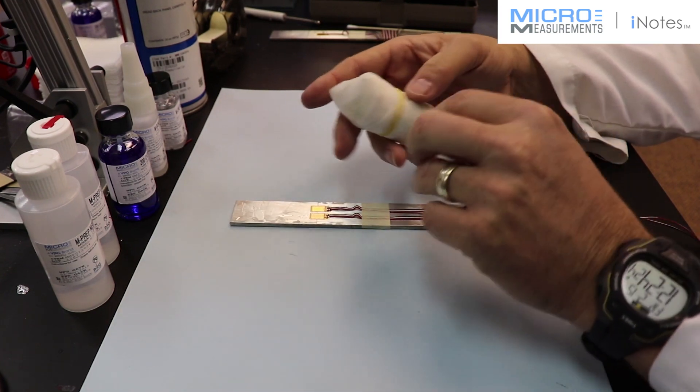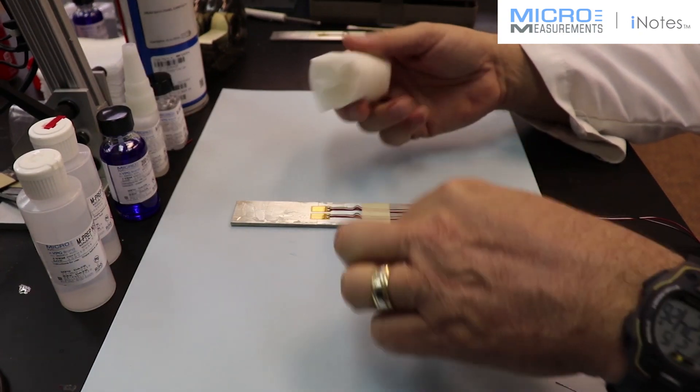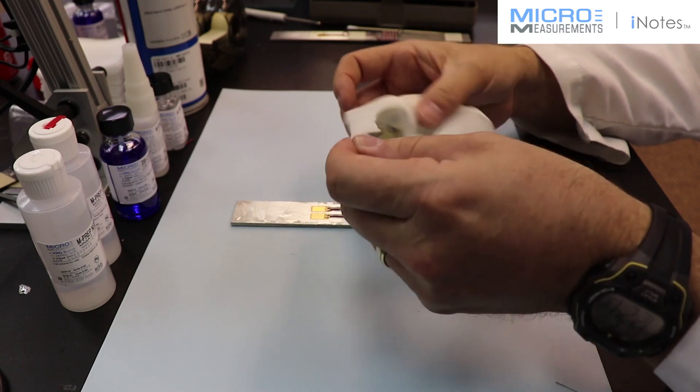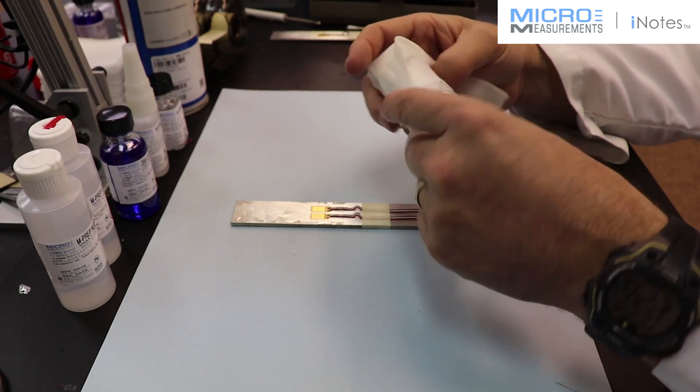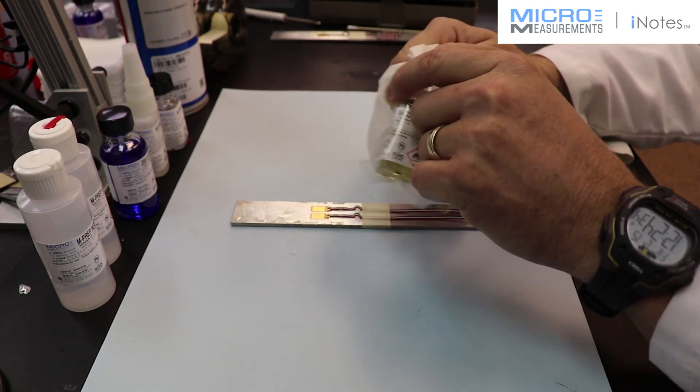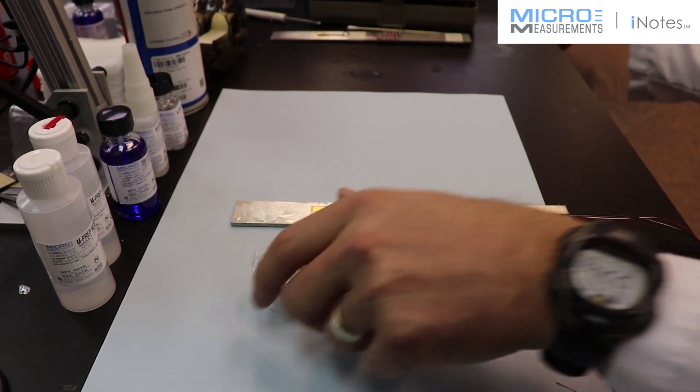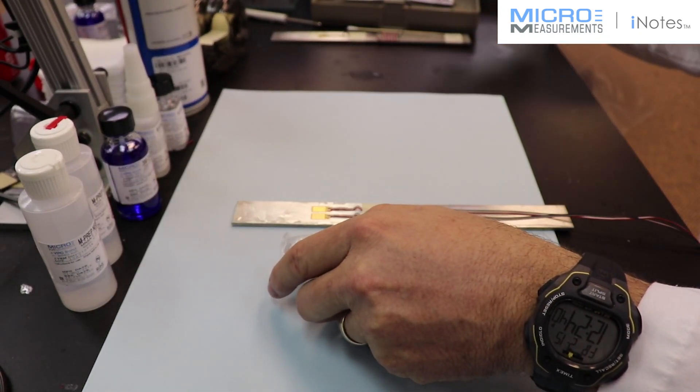So the last step here is I'm going to apply some protective coating. We're going to use the M-Coat A which is a polyurethane. It goes on very easy. It's easy to apply. It takes about 30 minutes, 20 to 30 minutes to be tact free where you can handle it.